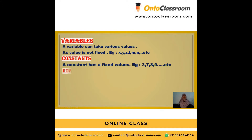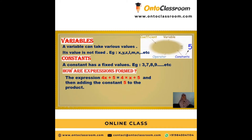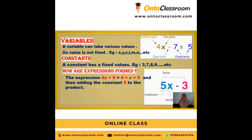What are variables? Variables can take various values. For example, the value of the variable x can be assigned as y or as 5, and the variable y can be assigned the value 8 — whatever it may be. The value is not fixed. For example, all alphabetical letters such as x, y, z, a, b, lm, n, o, p, q, etc. can be variables.